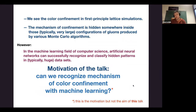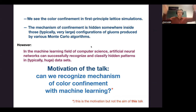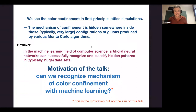We turn to first-principles simulations. We see color confinement in simulations — we have configurations of gluons and we know they're confined, but we don't understand why. There are too many degrees of freedom — terabytes of data in computers — this is a big data problem. You have enormous amounts of data and need a short answer. That's why we turn to machine learning, which deals with big data. The motivation: can we recognize the mechanism of color confinement with machine learning?